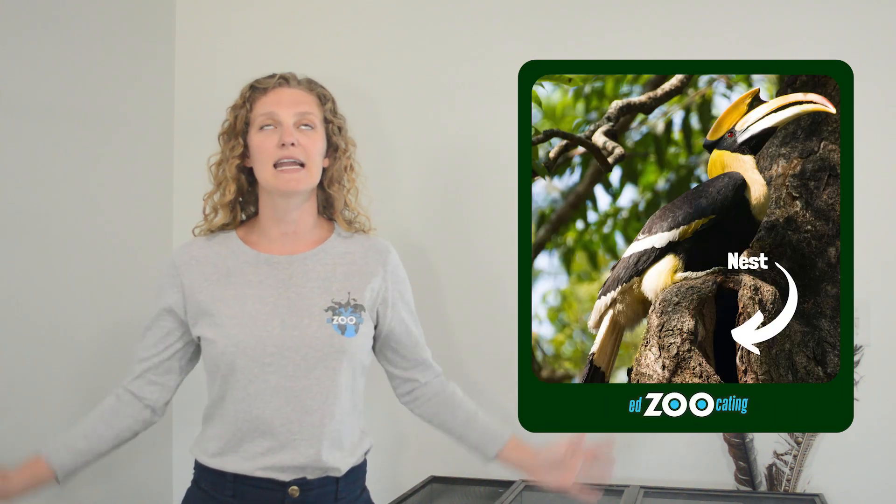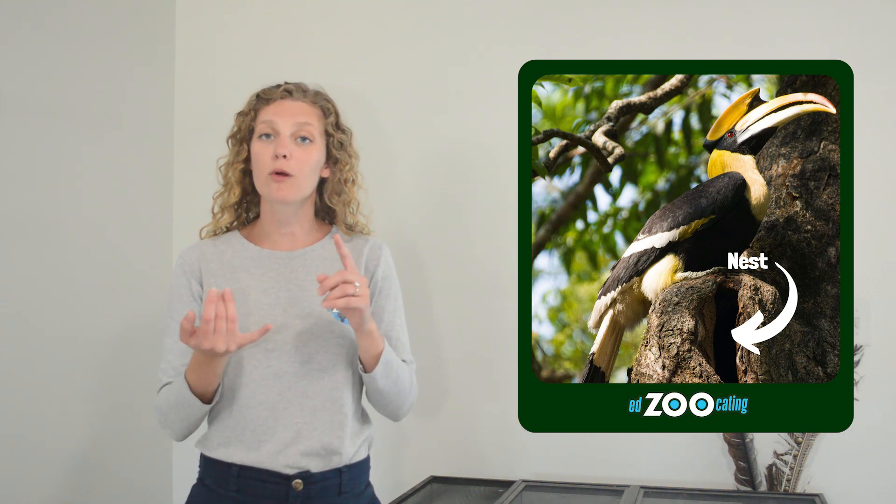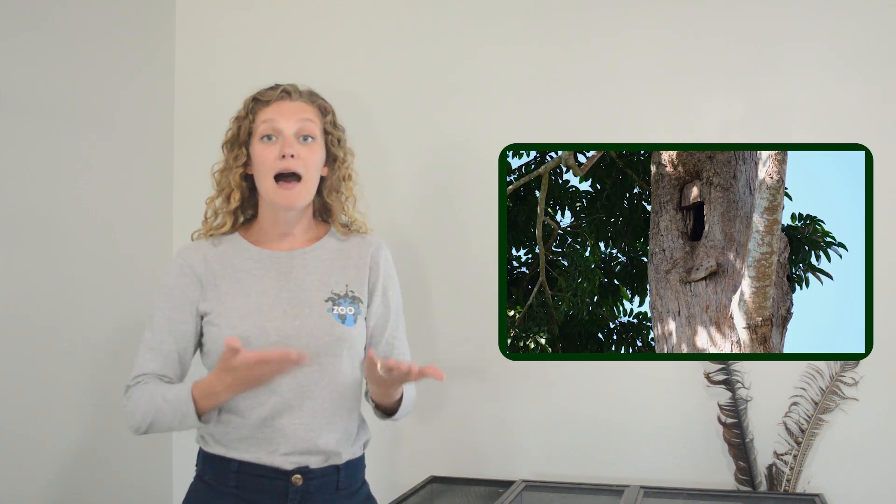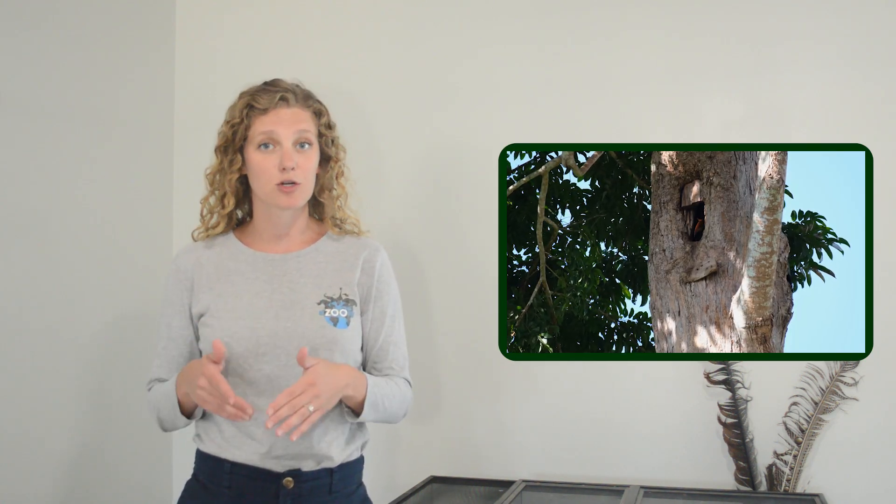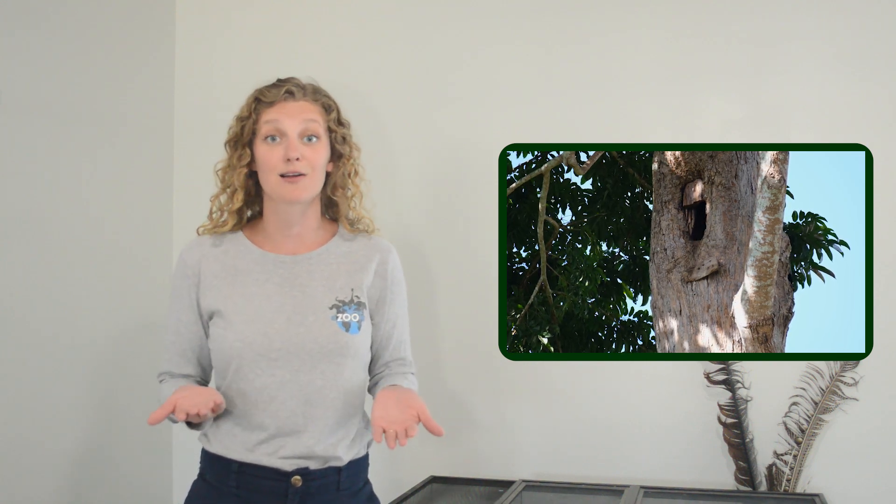And the way that these birds are typically nesting is they need a tree cavity in a very tall old growth tree. A tree cavity is basically a hole in the side of the tree trunk and those can sometimes be formed by birds like woodpeckers, but more commonly they're formed when a tree branch falls off the side of the tree trunk and rips open a big hole in the side. A lot of hornbills will use the same nest year after year if it's available because new nests can be really hard to find.